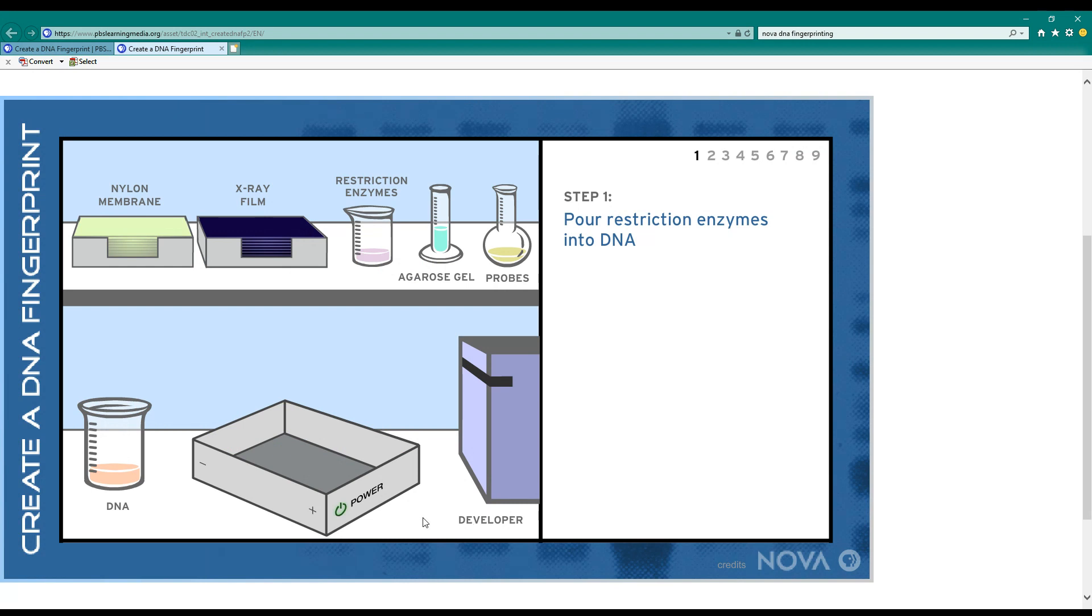So what we're going to do is take our sample DNA from the crime scene and from each of our potential suspects or fathers, whatever we have, and cut it up into tiny pieces with something called a restriction enzyme.